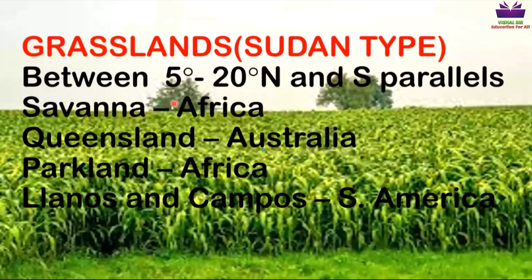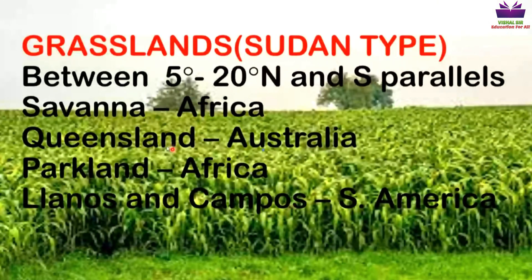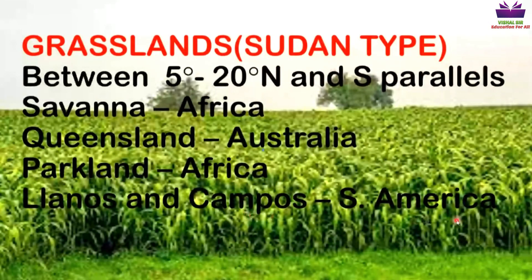These grasslands are named differently across continents. In Africa they are called Savannah and Parkland; in Australia they are called Queensland; and in South America they are called Llanos and Campos. You need to know these names as they could be asked in match-the-columns questions.